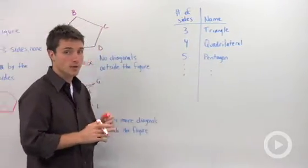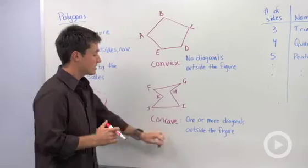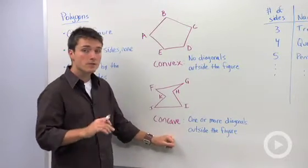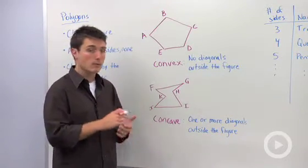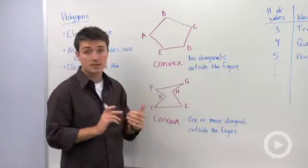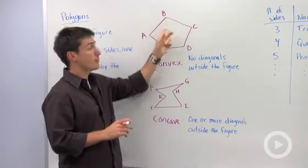Now there's two different types of polygons, convex and concave. And the difference is in the diagonals. So remember, a diagonal is a segment that connects non-consecutive vertices.